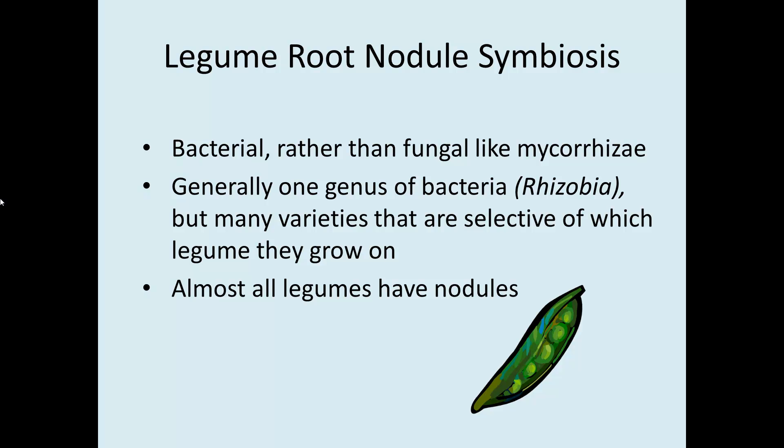The other really interesting relationship in roots is legume root nodule symbiosis. These are specific to legumes — big legumes, even trees, small legumes — but only members of the Fabaceae, which includes beans, peas, redbud, locust trees, and a large variety of plants. In this case, bacteria rather than fungi form the symbiosis, generally in a genus called Rhizobia. Almost all legumes do this; it's quite rare when they don't.